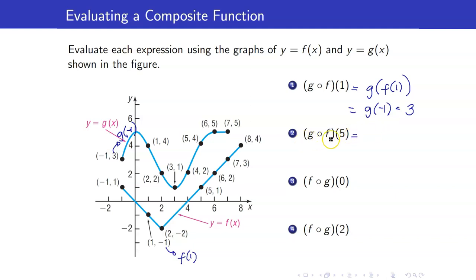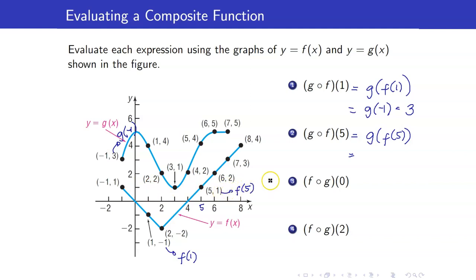Next, g circle f of 5. This is g of f of 5. What is f of 5? Looking at f when x is equal to 5, the y-coordinate is equal to 1. So 1 is your f of 5, meaning this is g of 1. For g of 1, looking at the graph of g when x is equal to 1, y is equal to 4.